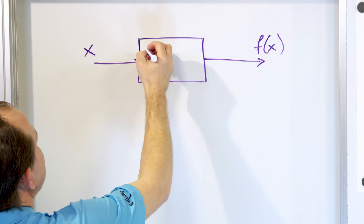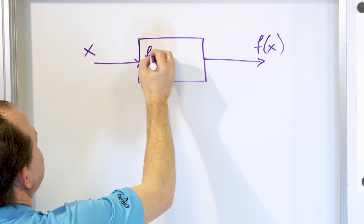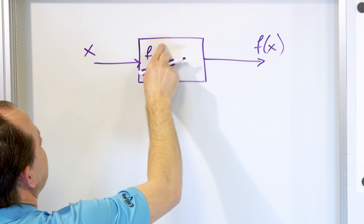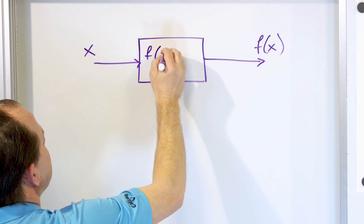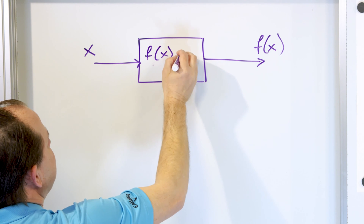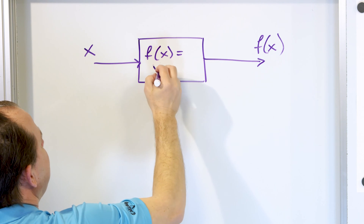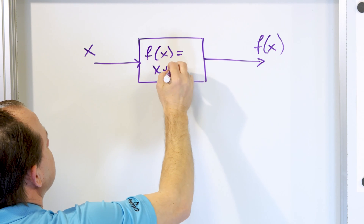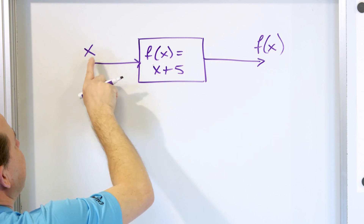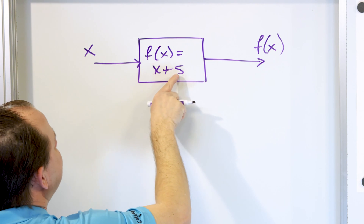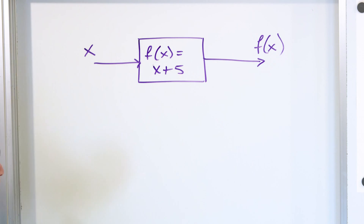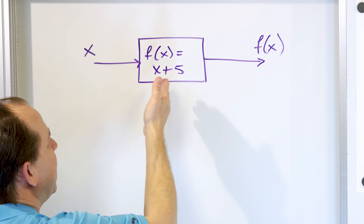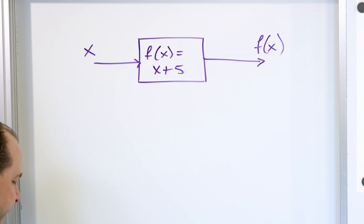This function can be anything. It could be f of x equals x plus 5, where I take the input values, I add 5 to them, and then that's what I call f of x, and I dump them on the output. And so this is what a function is.